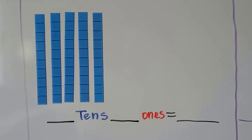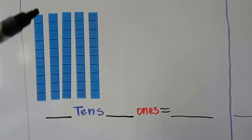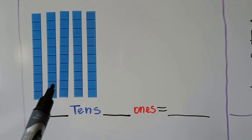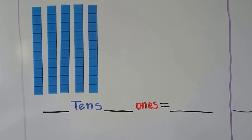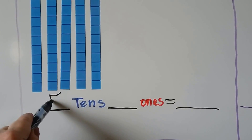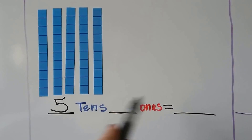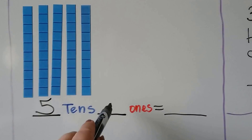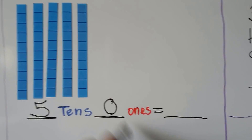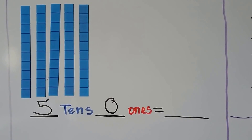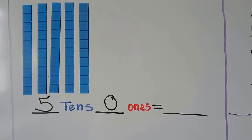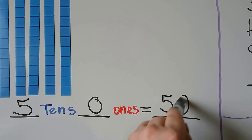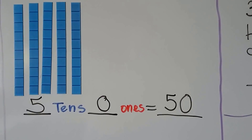How many do we have here? These are rods of 10, and we have one, two, three, four, five tens. Do you see any ones? There aren't any — we have zero ones. We can write this number. There's a five in the tens place and a zero in the ones place. That's 50.